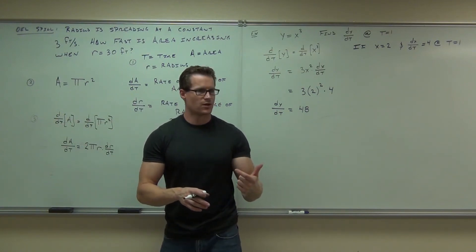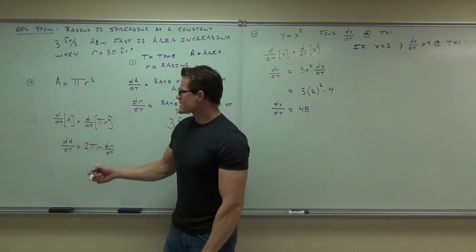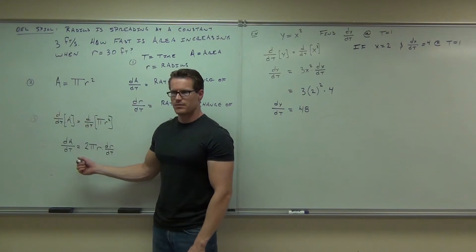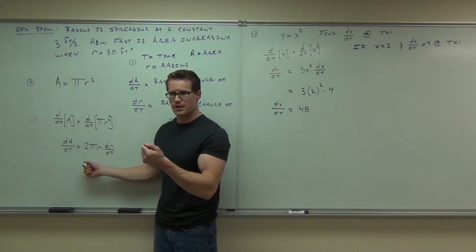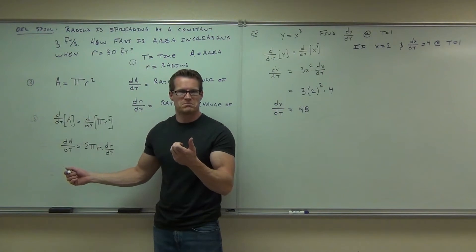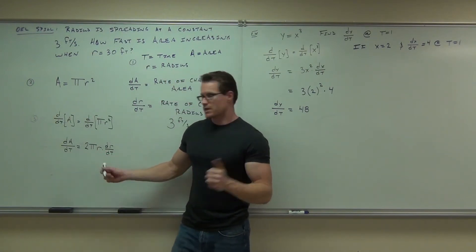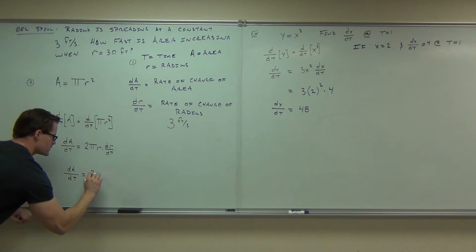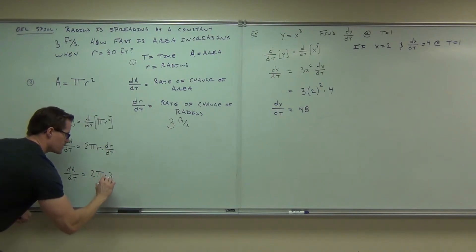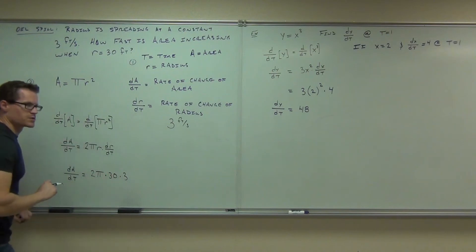Are you with me so far? Do I have everything else? Do I have an R? What does it say my R is at this certain time? So when this time comes about, my radius is 30. I don't even care what the time is. My radius is 30. Do I have a dR/dt? Three. So we're going to have 2π times 30 times 3 feet per second.